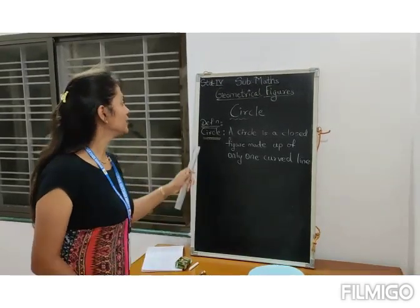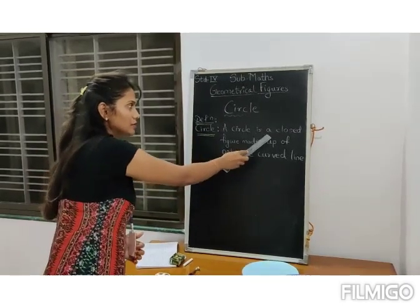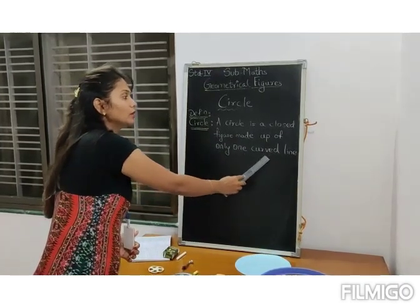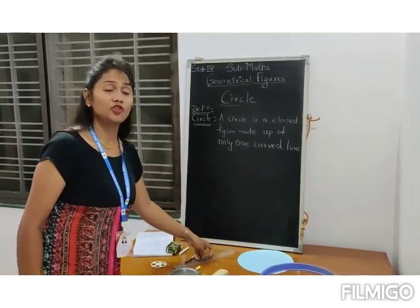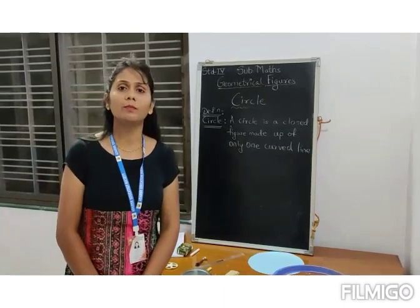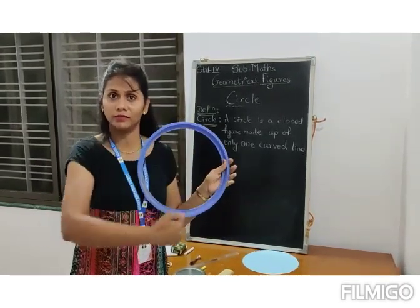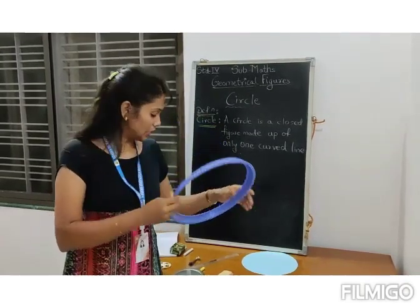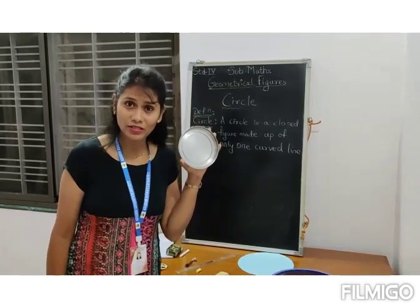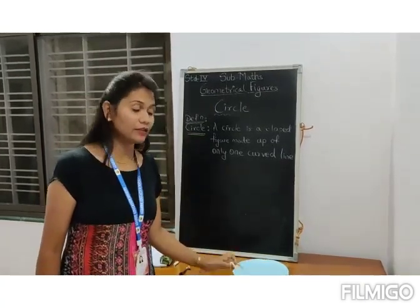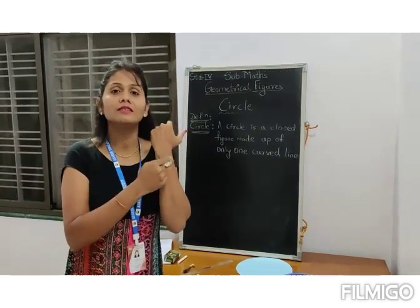The new topic is circle. So what is a circle? A circle is a closed figure made up of only one curved line. In day-to-day life we see many different objects in circular shape — this circle with one curved line, the regular dinner plates which we use at home, the utensils are round in shape. There are many objects like small toys. Even the dial of my watch is in circular shape.